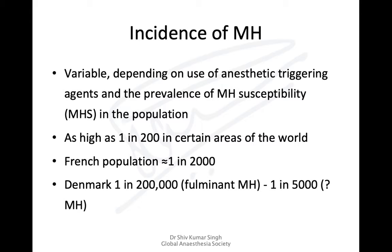The incidence of malignant hyperthermia is variable — it depends on the use of anesthetic triggering agents and the prevalence of MH susceptibility in the population. In some places it can be as high as one in 200, likely related to succinylcholine use. In the French population it is almost one in 2000, and in Denmark it is one in 200,000 to one in 5000 when all susceptible cases are taken into account.